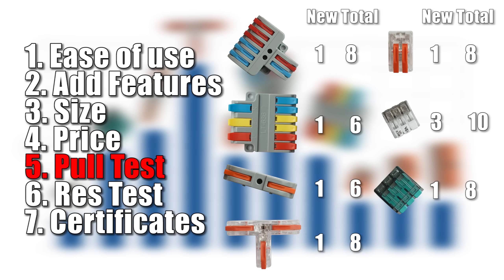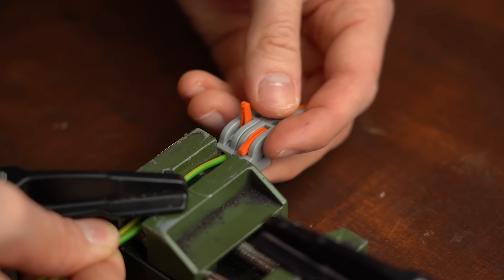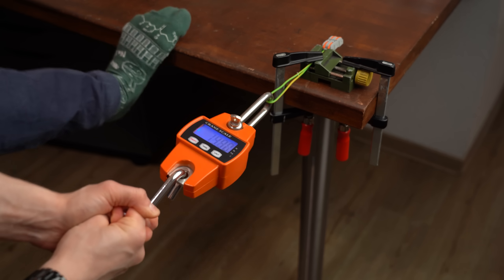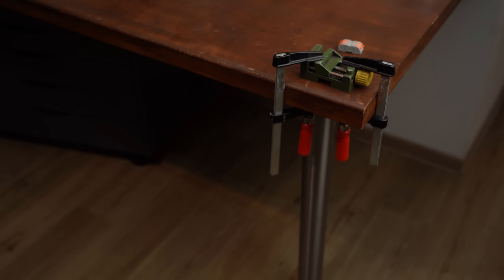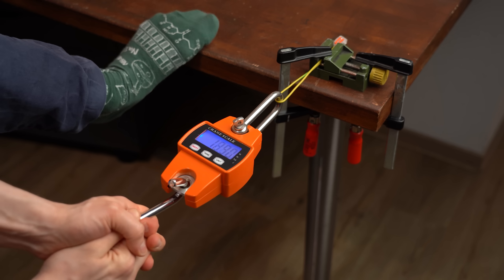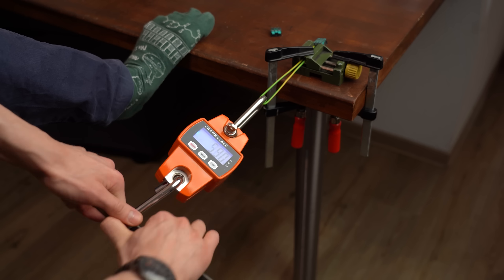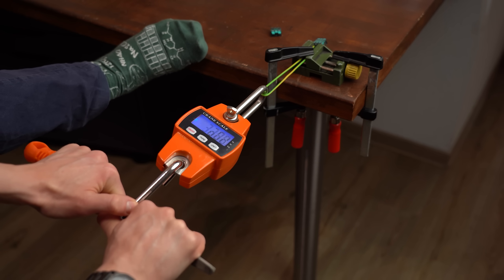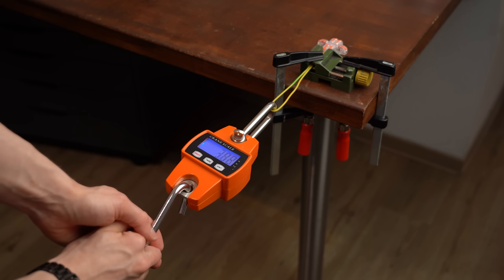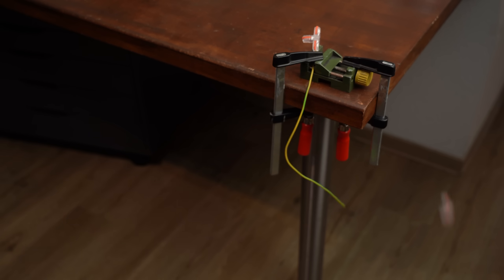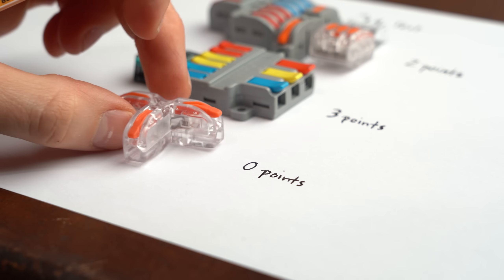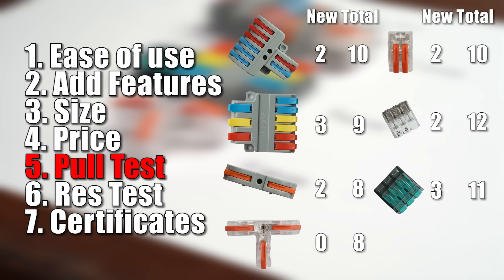So next we come to the pull test in which I simply placed a solid core conductor in the connectors which I then pulled out while measuring how much kg of force I needed to do that. For the most part, the results lay between 20-30kg, which I am only calling good here and not excellent because there were two connectors against whose gripping power I had no chance, therefore deserving 3 points. But on the other hand, there was also one connector that didn't really grab well and thus I could even remove wires with my bare hands, which I think is pretty bad.